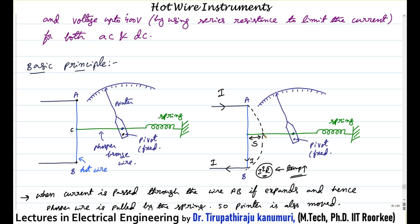Because of this sag, at point C, this wire is pulling the spring. The spring will move in that direction, and because the phosphor bronze wire is pulled away, the pointer will also move to the new position. This is the basic working principle.